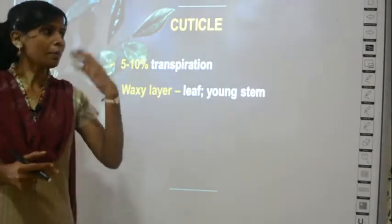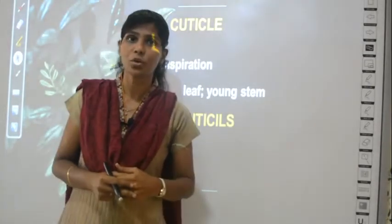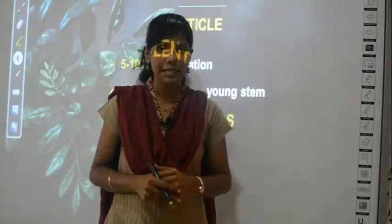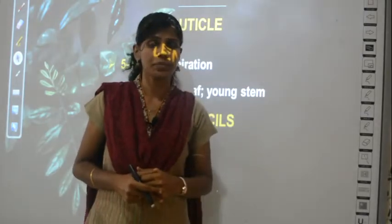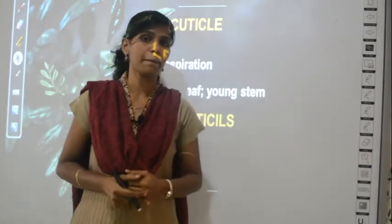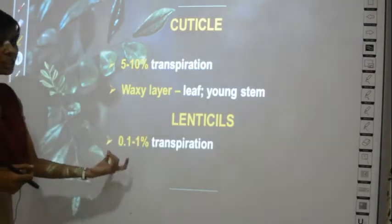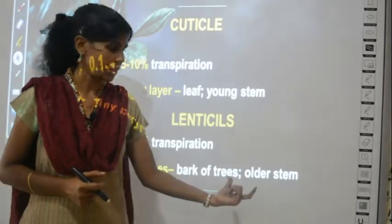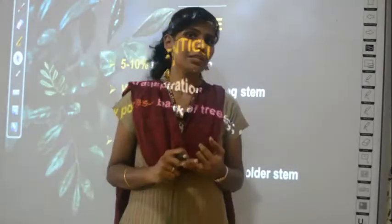One more pathway for transpiration is lenticels. Stomata are pores or holes present on the leaves or young stem. Lenticels, on the other hand, are pores found in the older stem or in the bark of the tree. Even the bark of the tree has small holes, and through these holes a minimum amount of transpiration happens — only 0.1 to 1 percent. So lenticels are tiny pores found in the bark of trees or older stems.